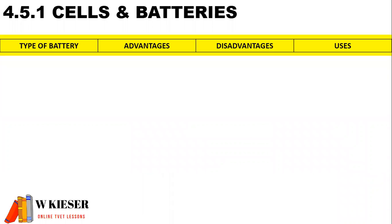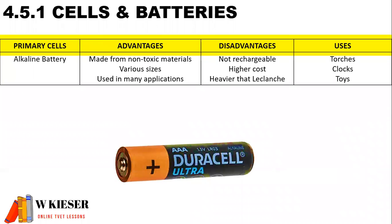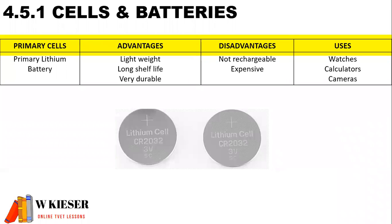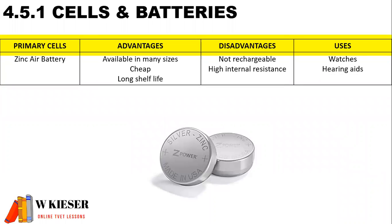The different types of batteries we find in practice for primary cells: we get the Leclanché battery, the alkaline battery, primary lithium batteries, silver oxide batteries, and the zinc-air battery.